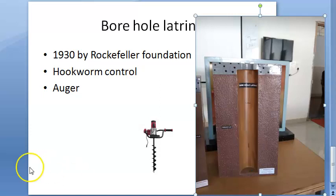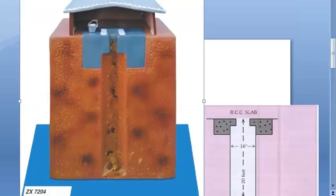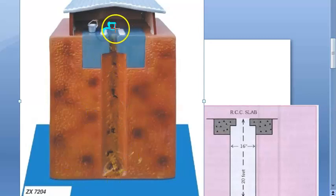On top there is a concrete squatting plate with a central opening. The foot rests are placed over the hole — you can see them here in white. The person squats with their legs on either side so that the waste goes into the hole below.